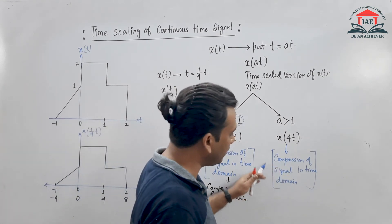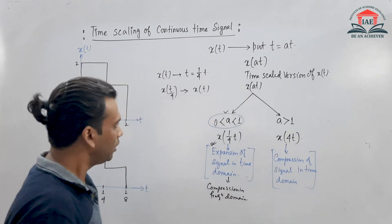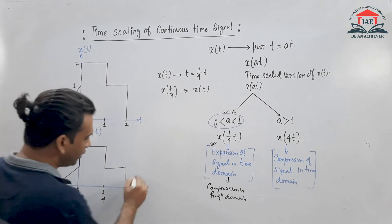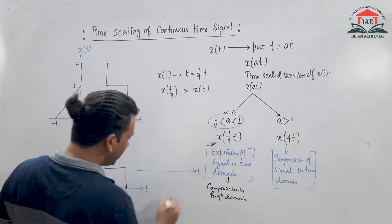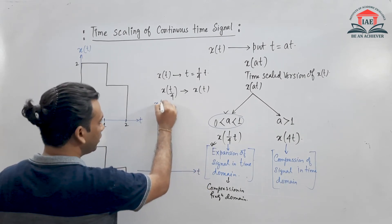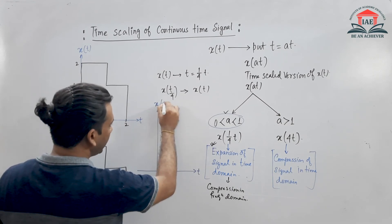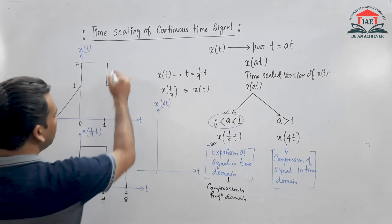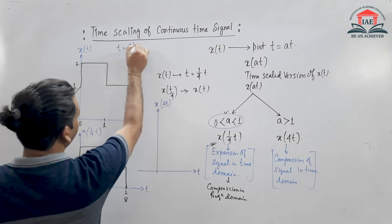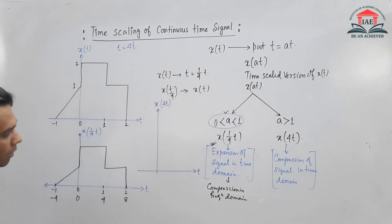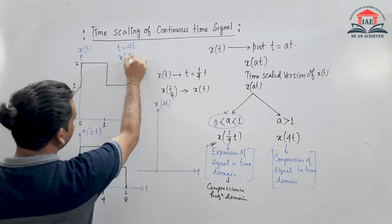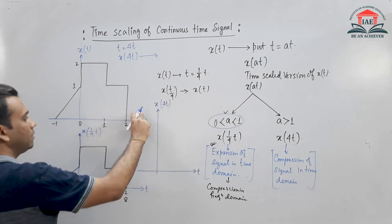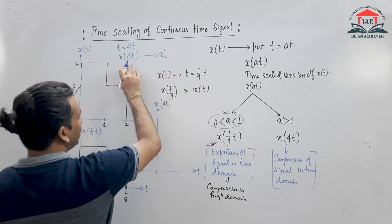Now let us see how the signal gets compressed when 'a' is greater than 1. For that, let us draw x(4t). Let us draw the time axis and plot x(4t).